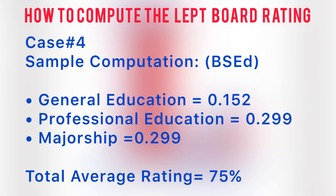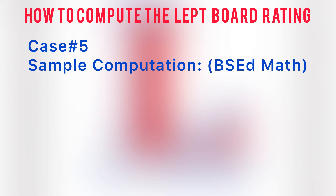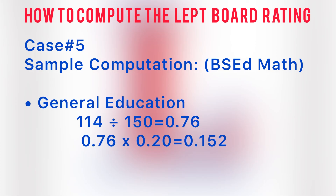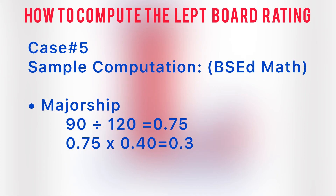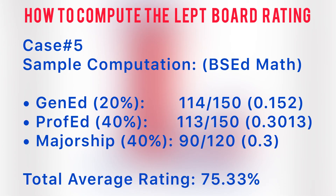There's a slight difference for math BS ed majors because the total number of items for majorship is only 120. For the minimum passing score: general education — 114 divided by 150 equals 0.76 times 0.20 equals 0.152. Professional education — 113 divided by 150 equals 0.754 times 0.40 equals 0.3013. Majorship — 90 divided by 120 equals 0.75 times 0.40 equals 0.30. Add these computed ratings together and get an average rating of 75.33%. This math major passed.